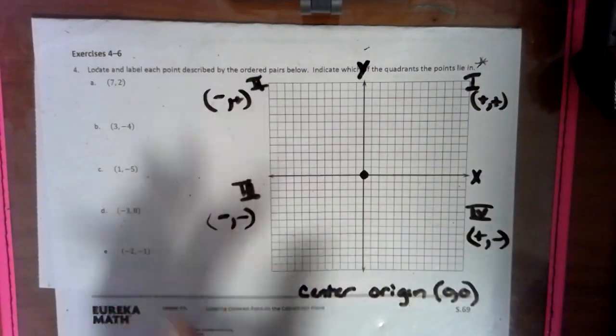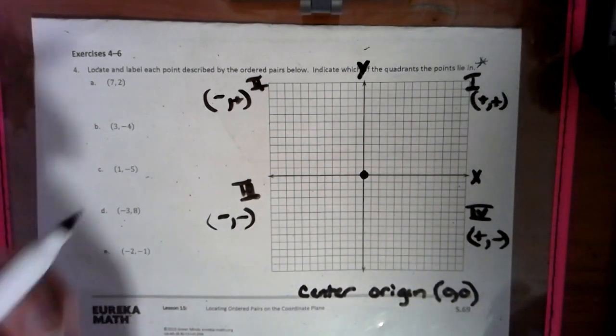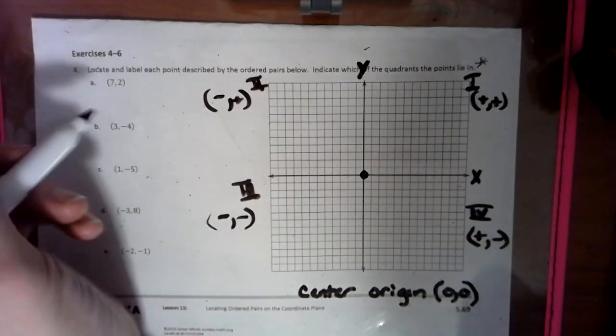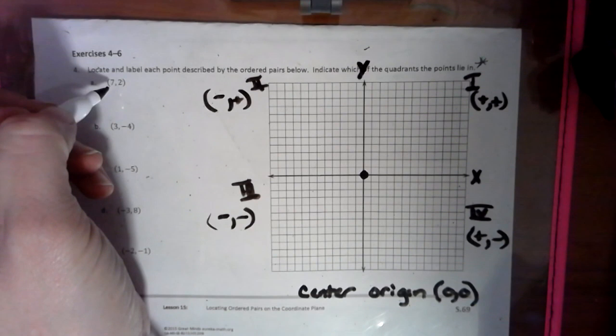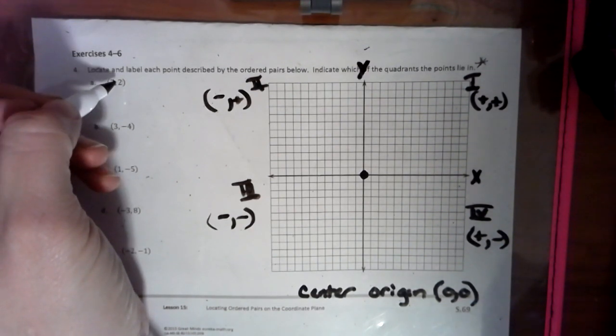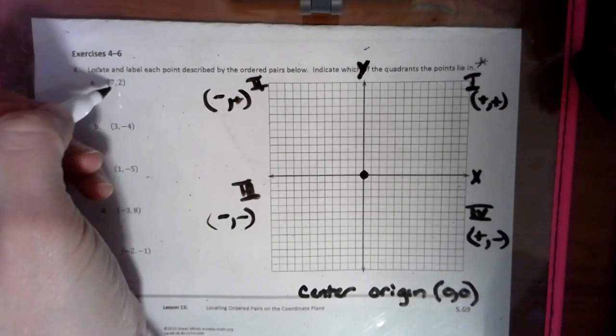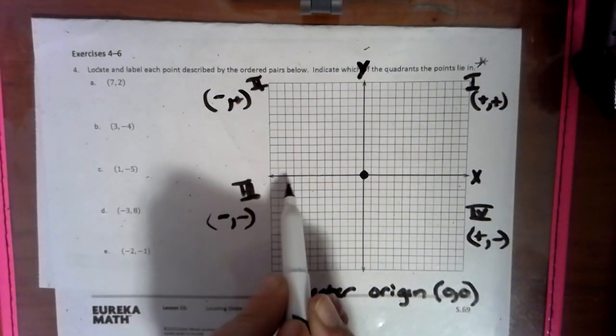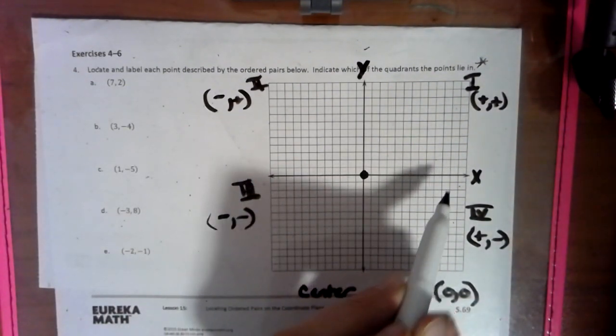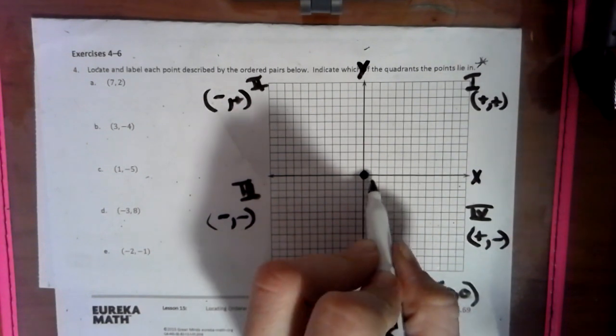So these are all background pieces of information. So now we're going to plot these points. So as you can see, there's no negatives here. So this is over 7 positives, and then up 2. So we always go over, whether we're going over to the left in the negatives or over to the right in the positives. So this is over 7.